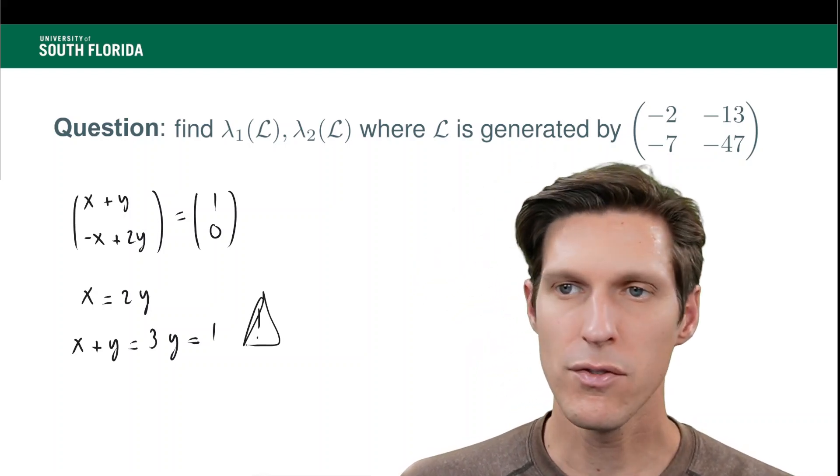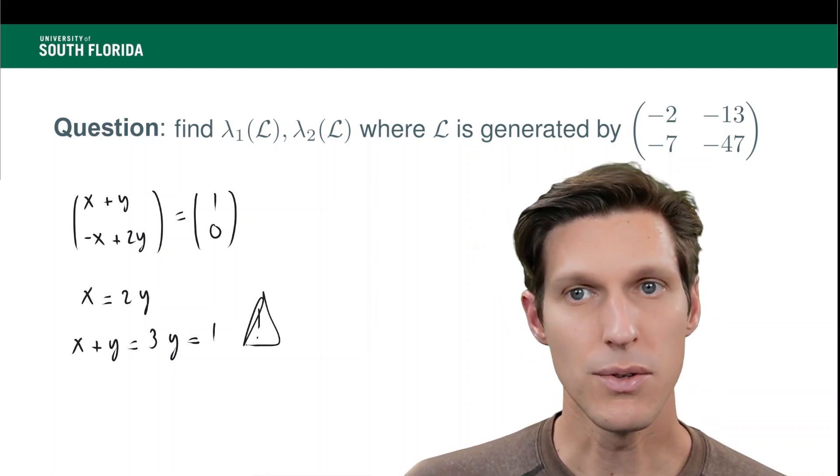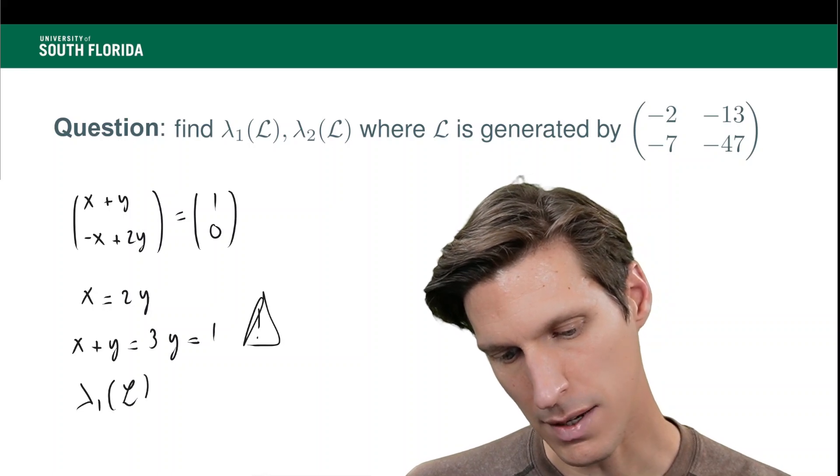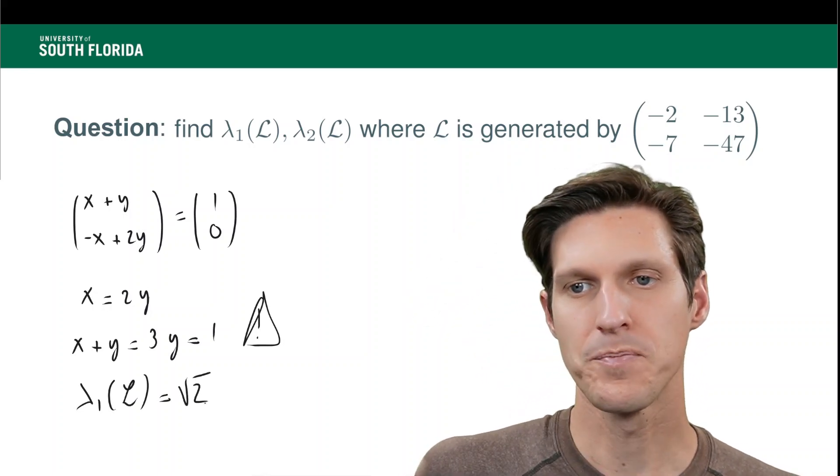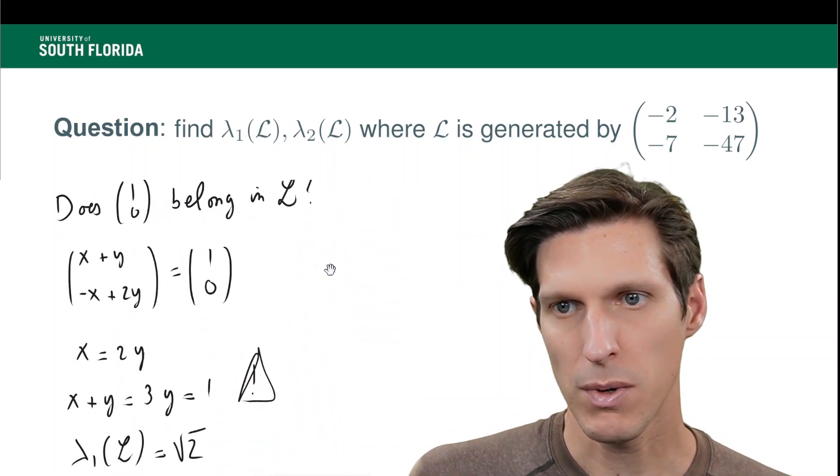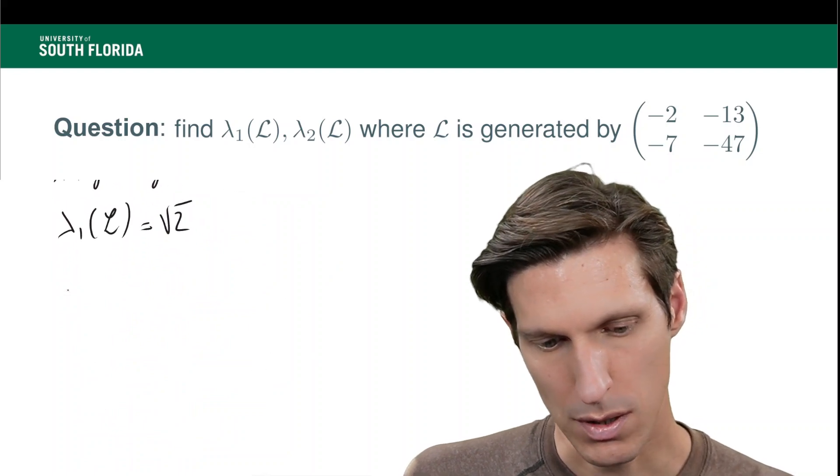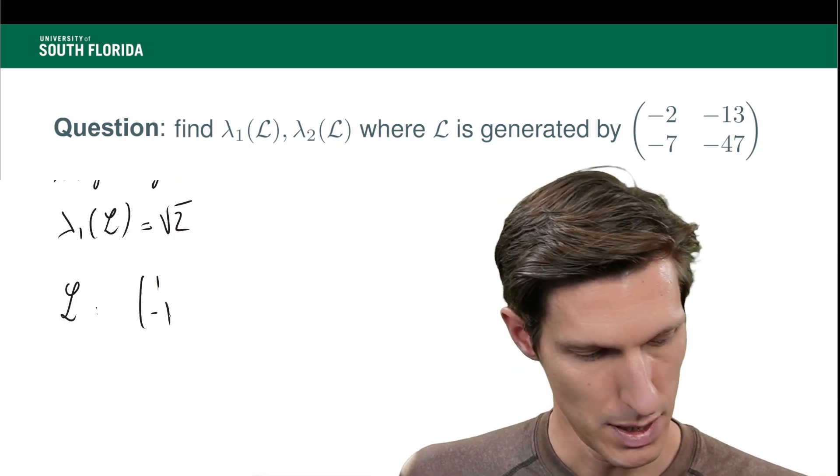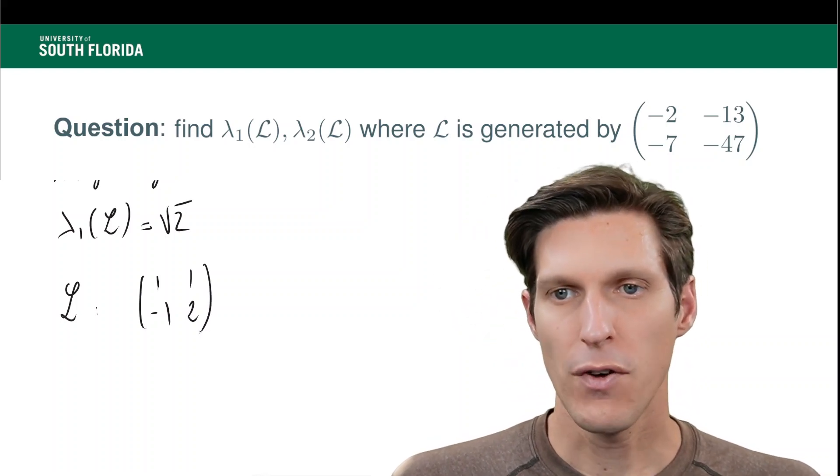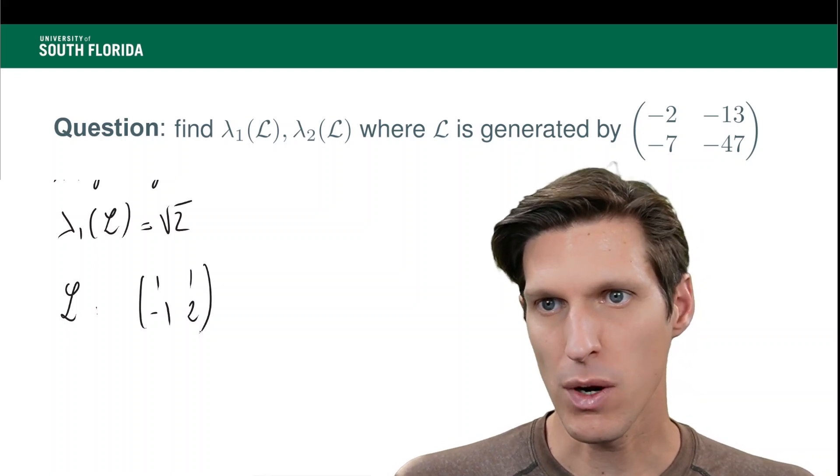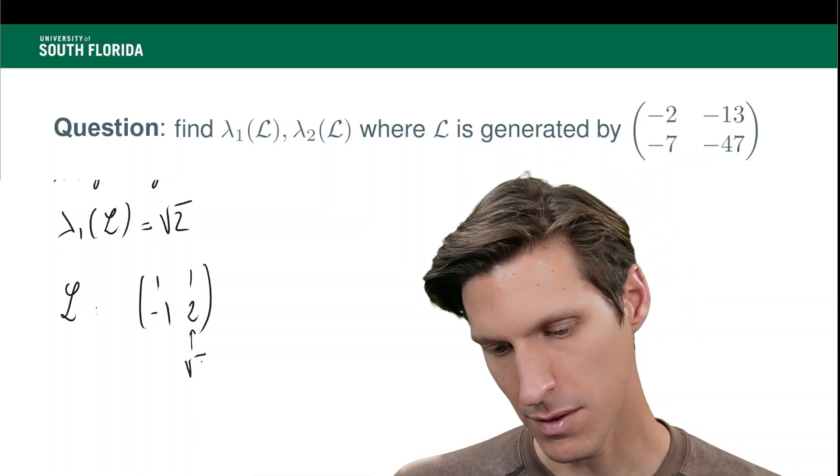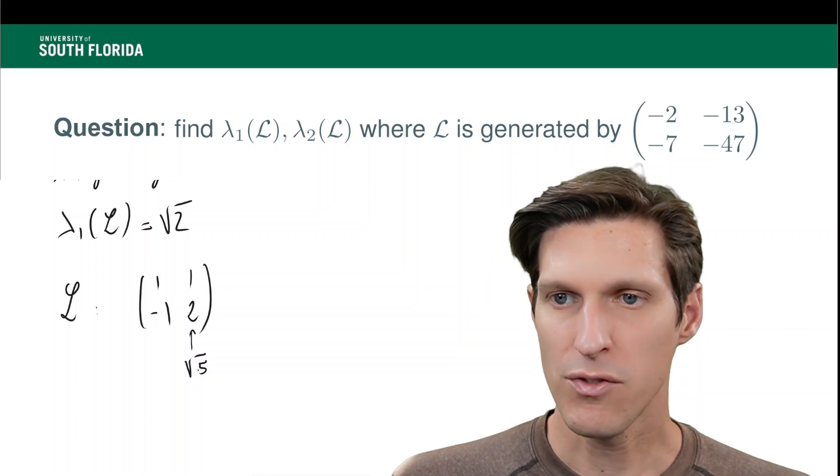So now what did we learn? So we have to verify also that (0, 1) does not belong in the lattice, but I will let you do that as an exercise. And so what did we learn? Remember, we have here that lambda 1 of our lattice is really square root 2. Okay, cool. So now, likewise, we have to argue. So remember, our lattice is generated by (1, -1) and (1, 2). So now we have the following question to find lambda 2. We know lambda 2 is not going to be less than square root 2, but it could be equal to square root 2, or it could be the length of this vector, which is square root 5. So is this square root 5, or is this square root 2?